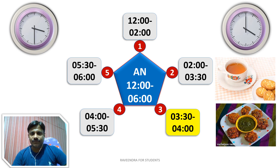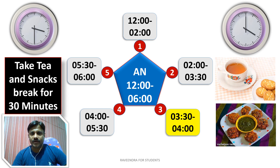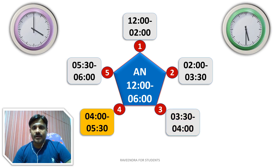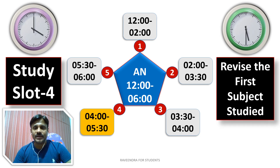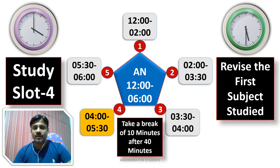After Study Slot 3, take a half-hour tea and snacks break from 3:30 to 4 p.m. Then comes Study Slot 4: 4 p.m. to 5:30 p.m. — one and a half hours. In this slot, revise the subject you studied in Study Slot 1 of the morning. You can do a self-quiz, take an online quiz, or discuss doubts with a friend. Take a 10-minute break after every 40 minutes of study.